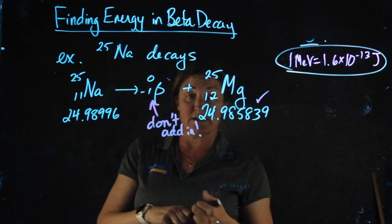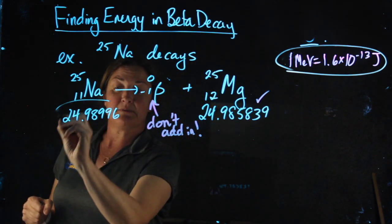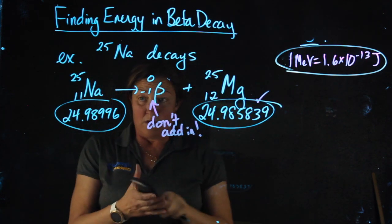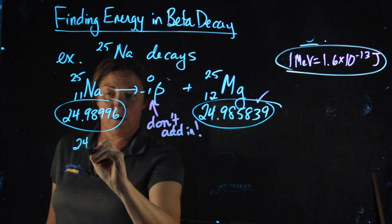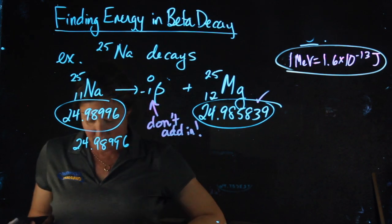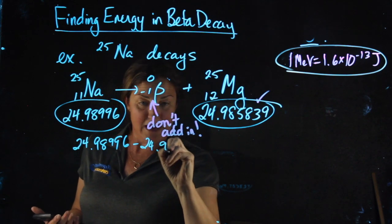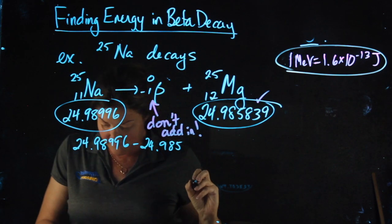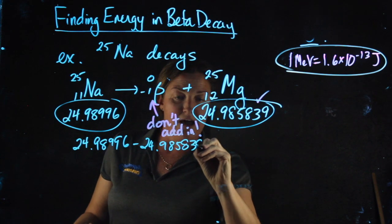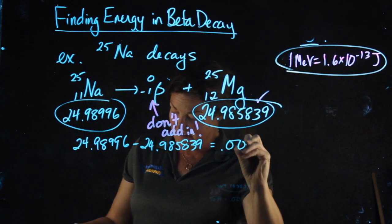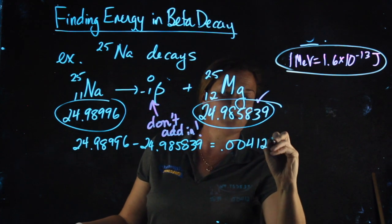So when I'm doing my difference in mass, I'm simply going to be subtracting these two numbers. So 24.98996 minus 24.985839 yields 0.004121 AMU.